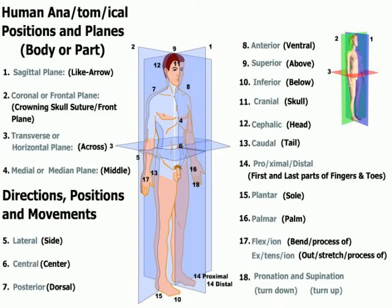Now let's look at body directions and positions. Number five shows the lateral aspect of something — 'lat' in Latin means side. Number six is the central portion; central means the center of something. An example: the belly button is the central aspect of the human body in its entirety. Number seven, posterior means that which lies behind or after. In an anatomical position, dorsal can also refer to the back.